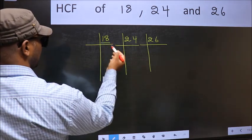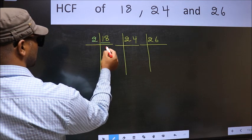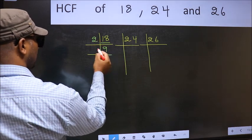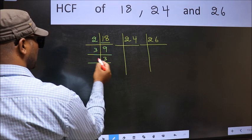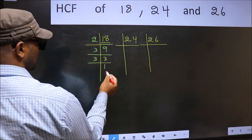Here we have 18. 18 is 2 times 9. 9 is 3 times 3. 3 is a prime number, so 3 times 1.